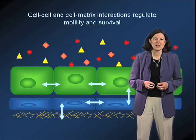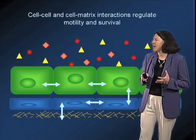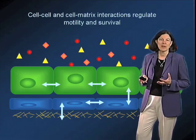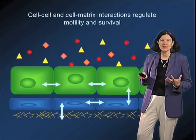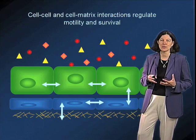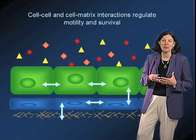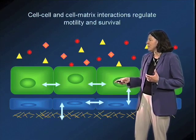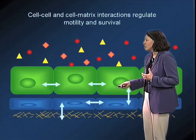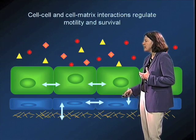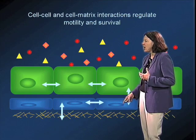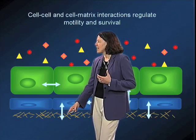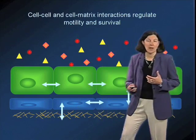As we've discussed in Part 1, cells are surrounded by other cells and extracellular matrix material and lots of soluble cues and factors that influence their behavior in really dramatic and important ways. One really important type of informational cue comes from the information that cells get from interacting with the extracellular matrix.